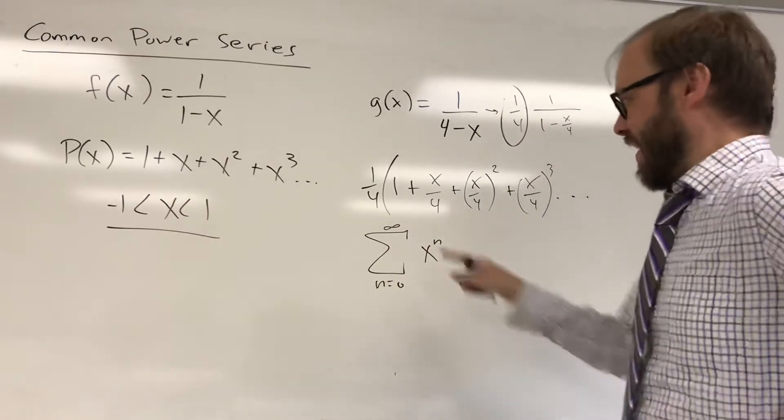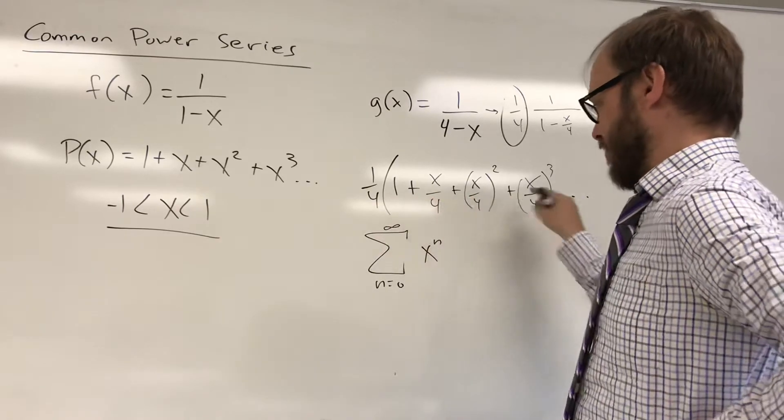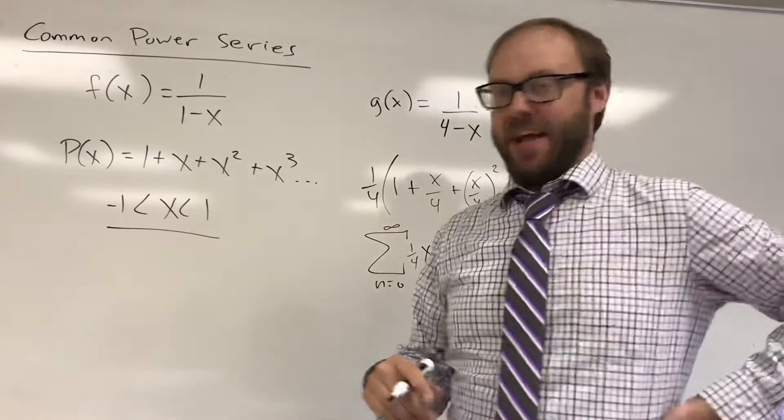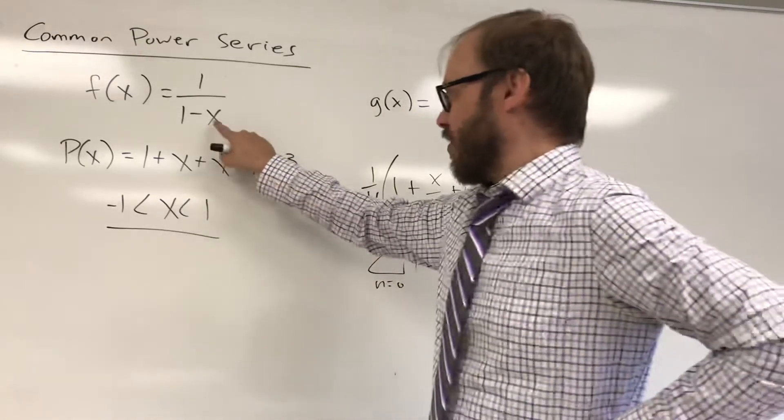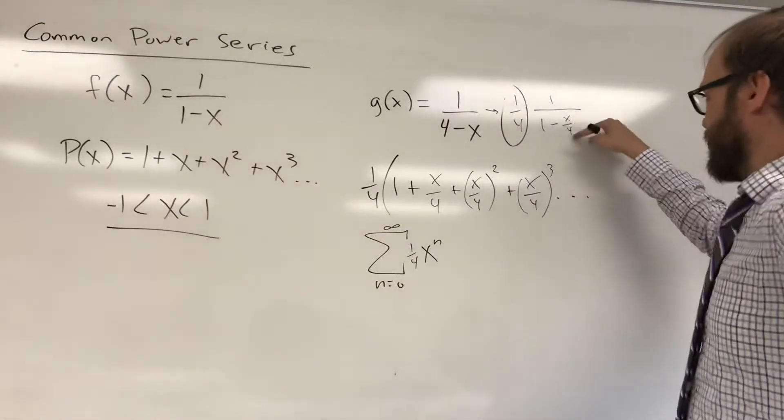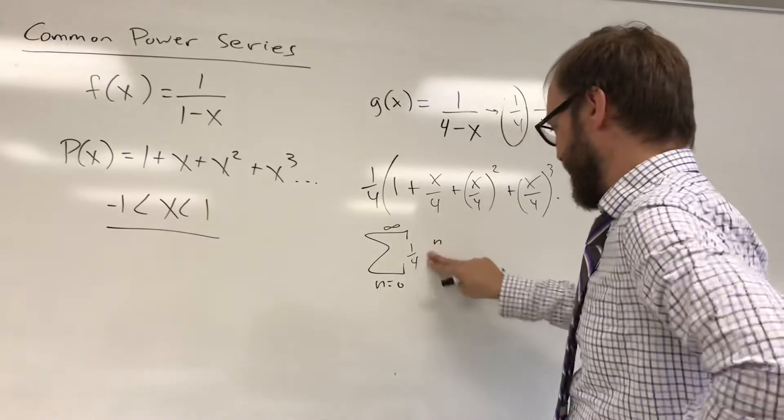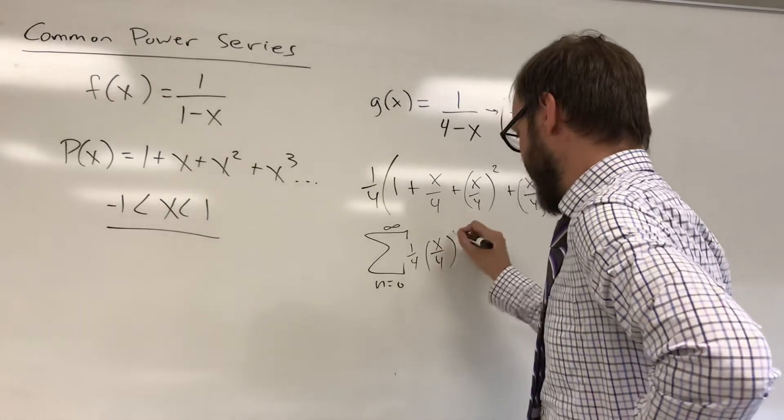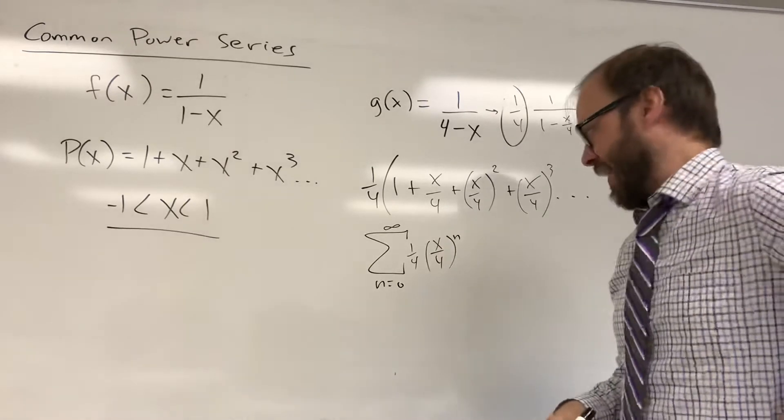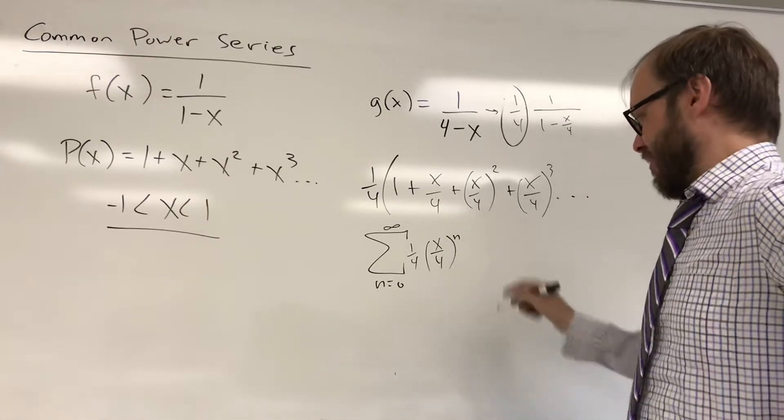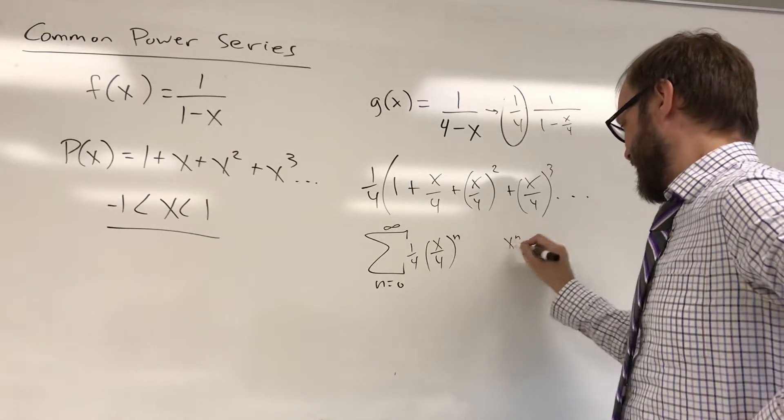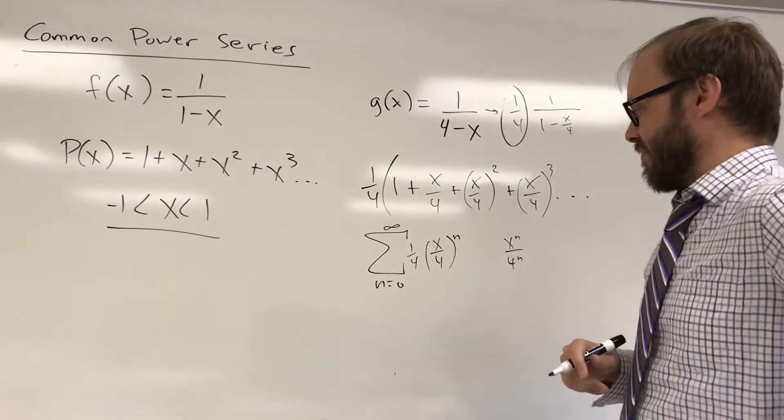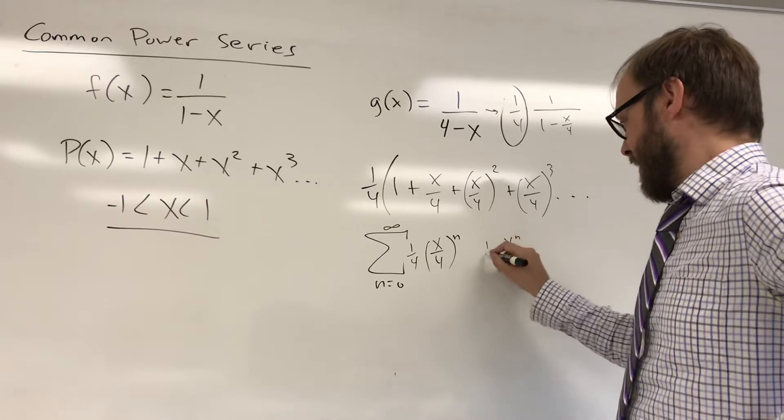We've done several things here. Each term is going to get multiplied by 1 fourth. So you could say, well, it's going to be 1 fourth x to the n. And our input was no longer x, it's an x to the fourth. So instead of an x there, it's going to be an x over 4 being taken to the n power. And you can kind of work this out. You can write that as x to the n over 4 to the n. You can distribute that through the fraction there. And the whole thing is being multiplied by 1 fourth.